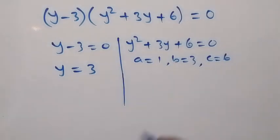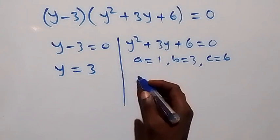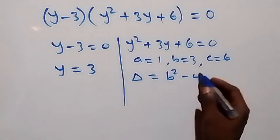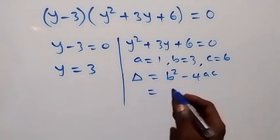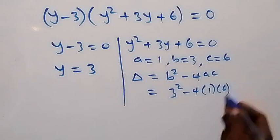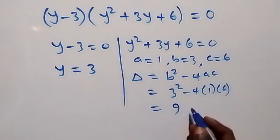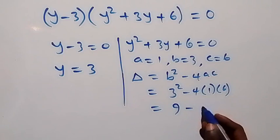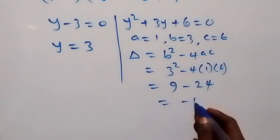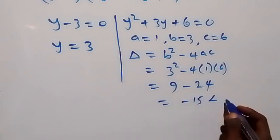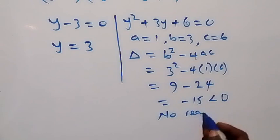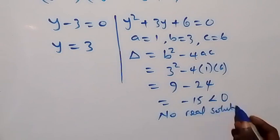We compare this with the general form of the quadratic equation and check the discriminant. If b squared minus 4ac: b is 3, so 3 squared minus 4 times 1 times 6 gives us 9 minus 24, which is minus 15, which is less than 0. So it implies that we have no real solution on this side.